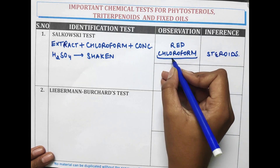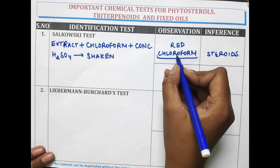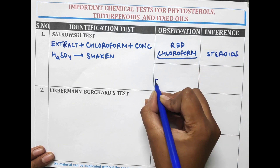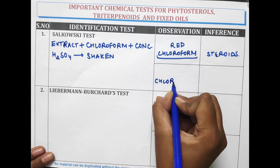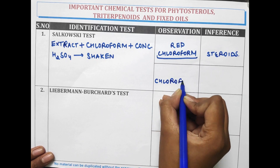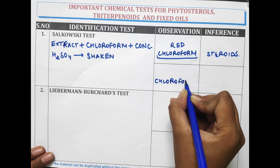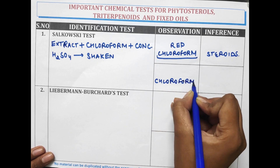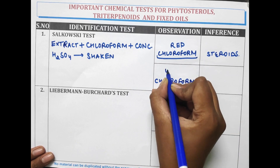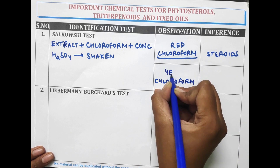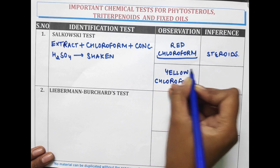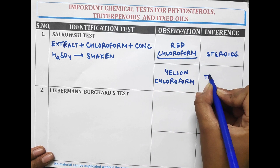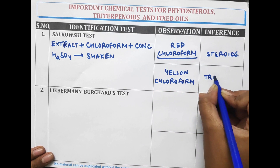And when this chloroform layer changes to yellow colour, it indicates the presence of triterpenoids.